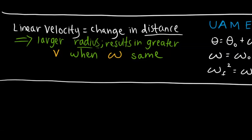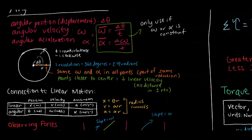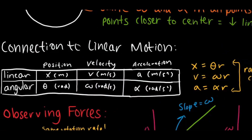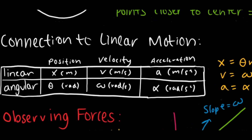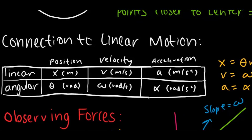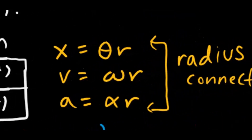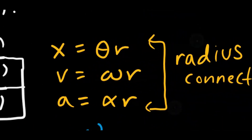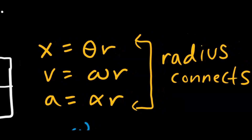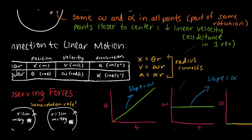The one with the 10-meter radius is going to have a much greater linear velocity. Here's a very important key concept: the connection between linear motion and angular motion. Linear position x corresponds to angular angle θ; linear velocity corresponds to angular velocity ω; and linear acceleration corresponds to angular acceleration α. You can easily convert between linear and angular values by using the radius — the radius connects both the linear and angular components.